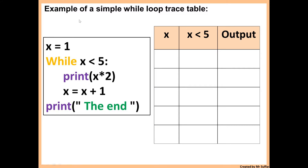So we've got x is equal to 1, so we put 1 in x. Then it says while x is less than 5. Now, 1 is less than 5 — that's true. Whenever the while loop condition is true, that's when you enter the loop.